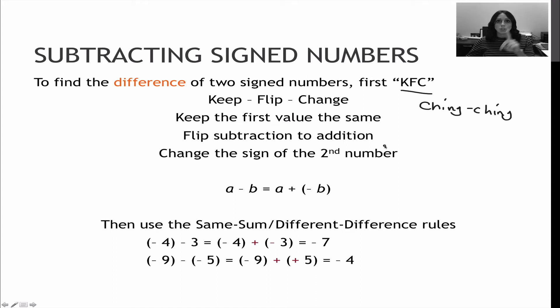KFC or ching-ching means keep flip change, which means when you have a subtraction, you're going to keep the first sign the same, you're going to flip subtraction to addition, and then you're going to change whatever sign follows the formerly subtraction sign. So A minus B turns into A plus negative B.